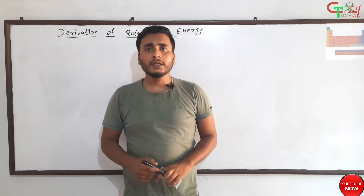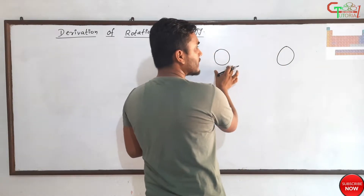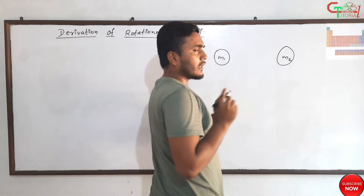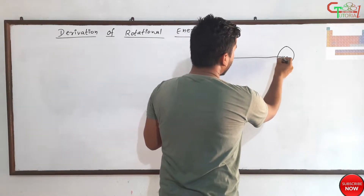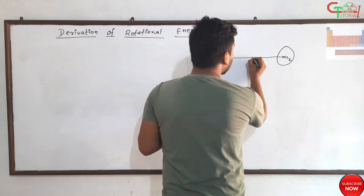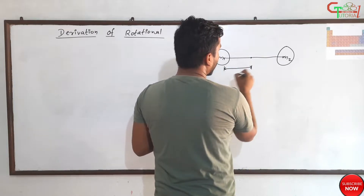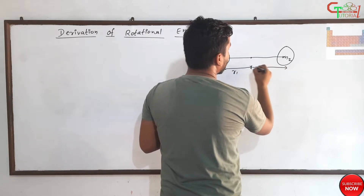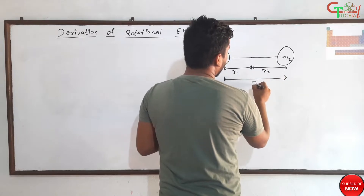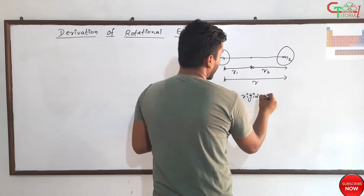First of all we need to consider a diatomic molecule. This is a diatomic molecule — this is the first atom and this is another atom. Let's consider their masses to be m1 and m2. There is a bond joining their centers. We know that there will be a center of gravity — let's say it is located here. The distance between the center of m1 and this center of gravity will be r1.